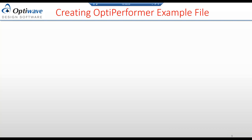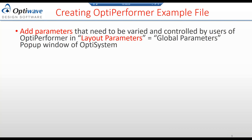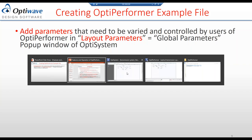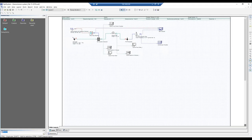To create an OptiPerformer example, you must start from OptiSystem — you need at least a single license to create the file. You need to add parameters through the global parameter pop-up window or through layout parameters. In this example, the OptiSystem layout has a CW laser, a pseudo-random bit sequence generator, a pulse generator, a modulator, a piece of fiber, a detector, a filter, and a bit error rate tester.